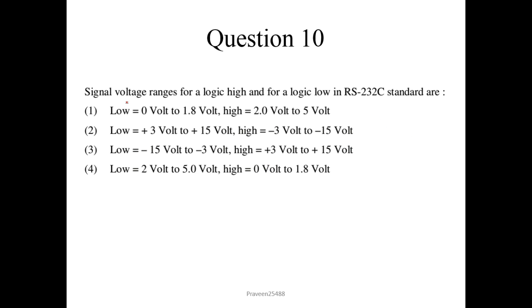Question number 10. Signal voltage ranges for logic high and logic low in RS-232C standard: for logic low it is -15V to -3V, and for logic high it is +3V to +15V. Very simple.